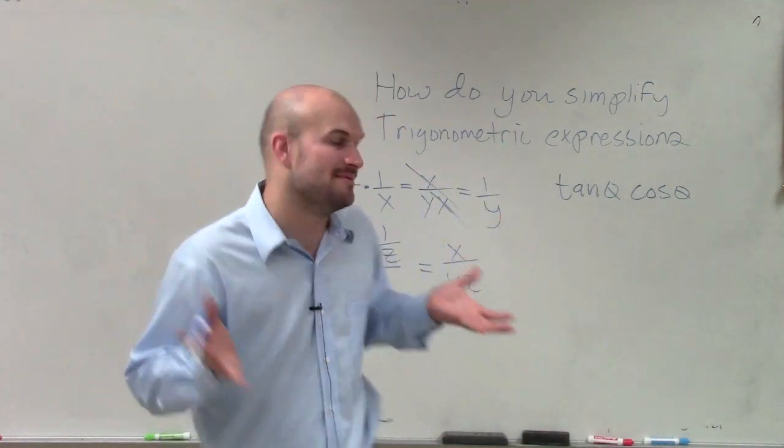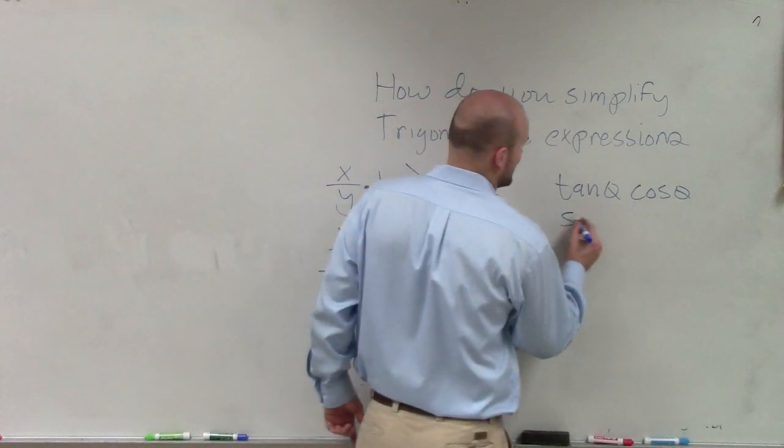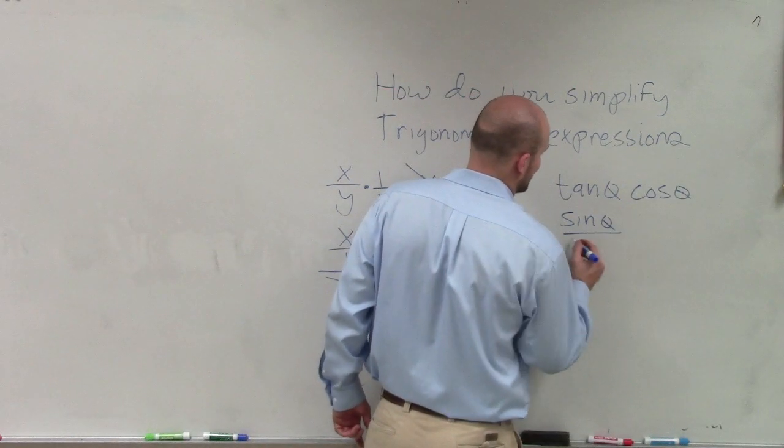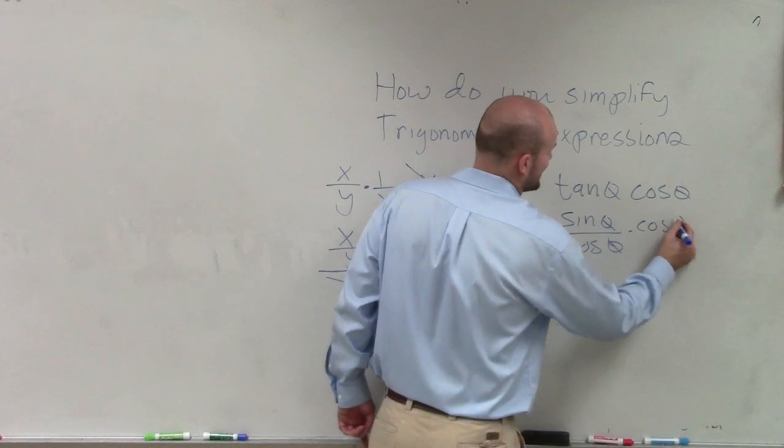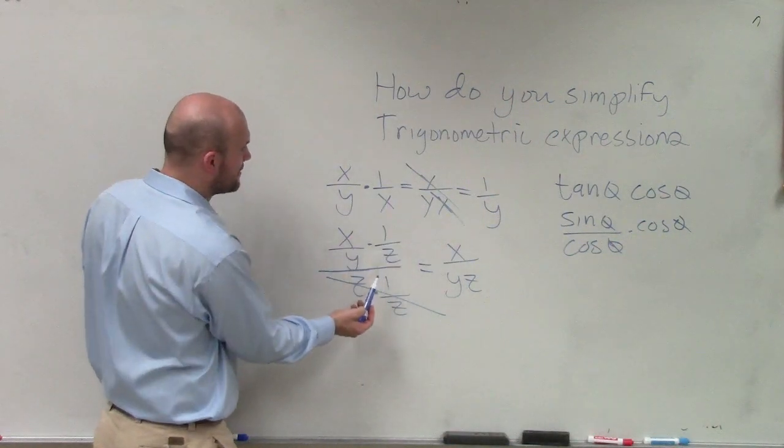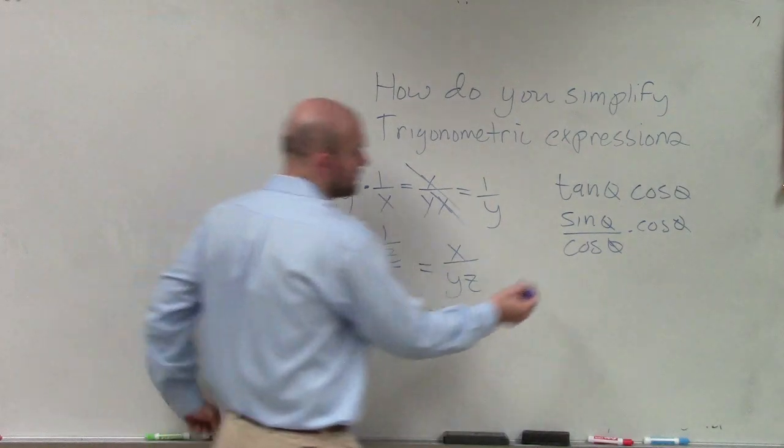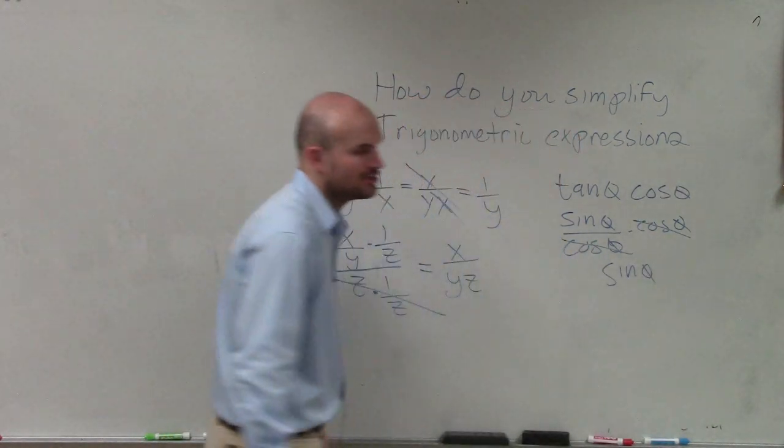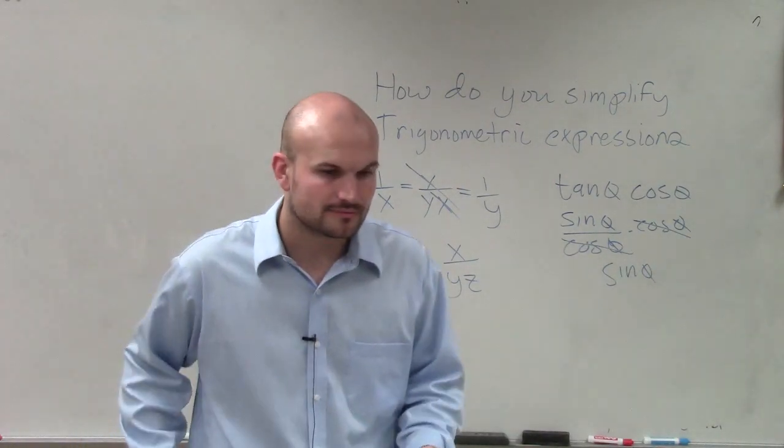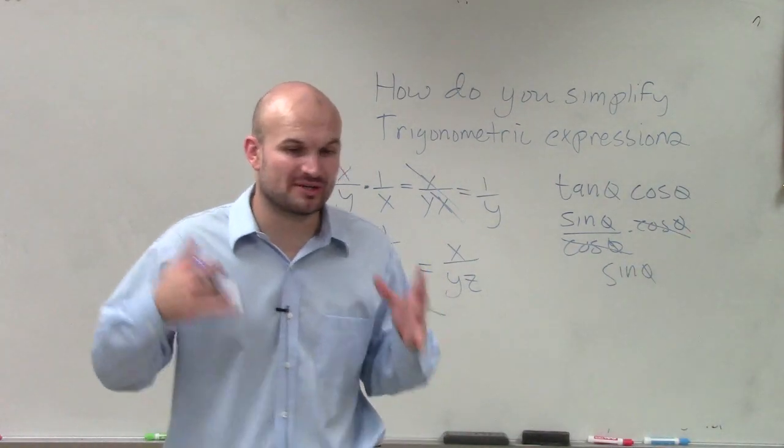Let's get this into some fractions so maybe then I can simplify this out. So I can rewrite the tangent as sine of theta over cosine of theta times cosine of theta. Now I have a similar operation like I had over here where now the cosines are going to divide out, and I'm just left with one trigonometric term of sine. So that's going to be very important when you're looking for these.